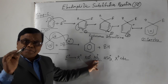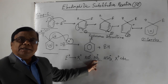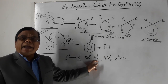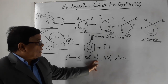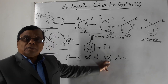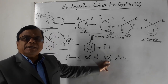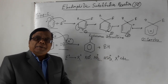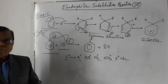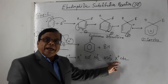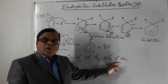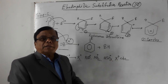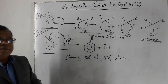If the nitronium ion is introduced into benzene in the presence of concentrated nitric acid and concentrated sulfuric acid, the product will be nitrobenzene. Also, in the presence of fuming sulfuric acid reacting with benzene, benzene sulfonic acid is formed. In the case of halogenation, if the halogen is chlorine, the product will be chlorobenzene.